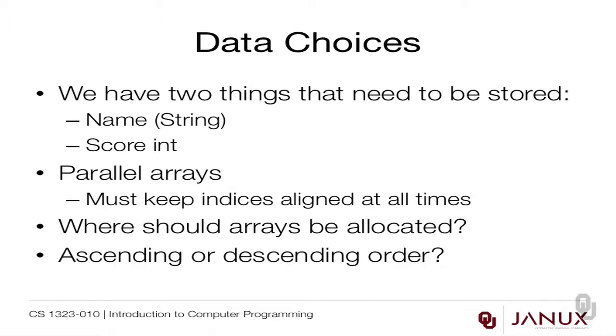The next thing we need to consider is the choices for our data. We have two things to store: the name of the player and the high score. For right now our only choice is something called a parallel array — an array of names and an array of scores. We also need to consider where these arrays should be allocated; I'm going to allocate them in the main program. We also need to decide whether we'll store scores in ascending or descending order. Ascending is typical, but it would be strange to have the lowest score at position 0, so let's pick descending order.